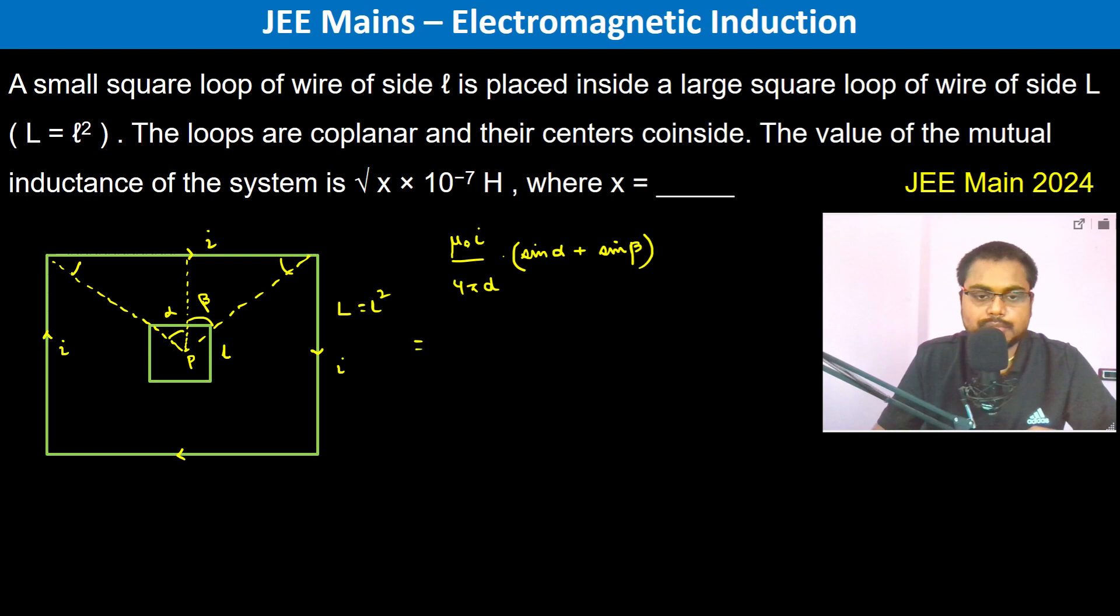Therefore it's going to be μ₀I. Now what is D? D is going to be L/2. So 4π into L/2 into sin 45°, which is 1/√2. This is due to one side; for all four sides, we multiply by 4.